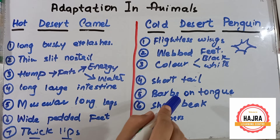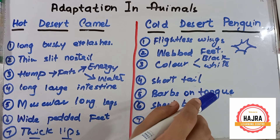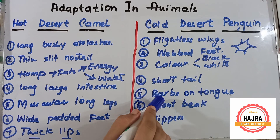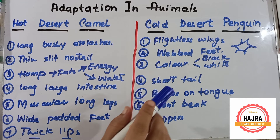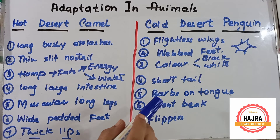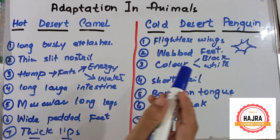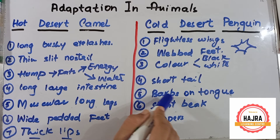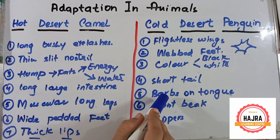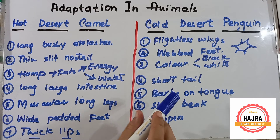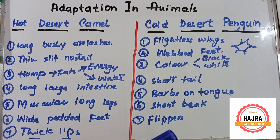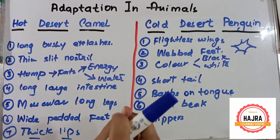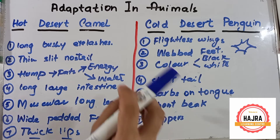Number five point: they have barbs on the tongue. The function of the barbs is to hold the prey so the prey will not escape. The barbs are present at the back side of the tongue and their function is to grab the prey so it will not escape.